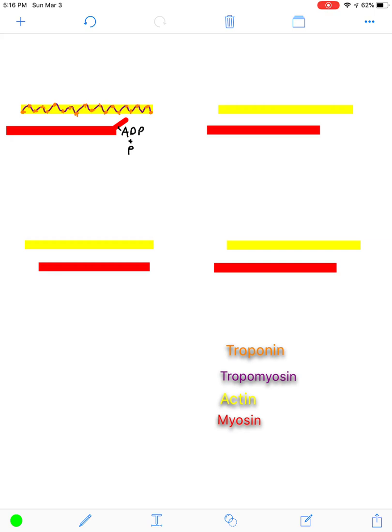Now the first thing to focus on here is going to be what are the proteins involved. There are two regulatory proteins, troponin and tropomyosin, and two contractile proteins, actin and myosin.